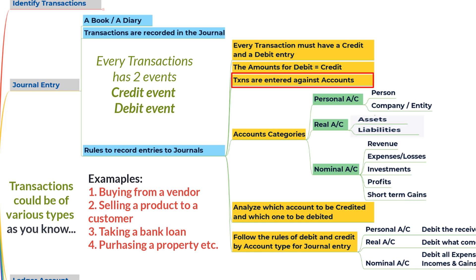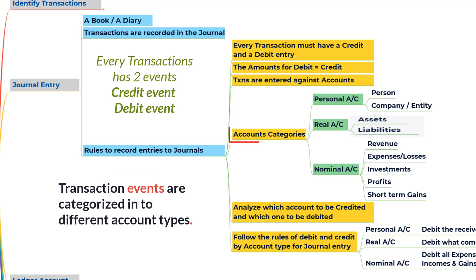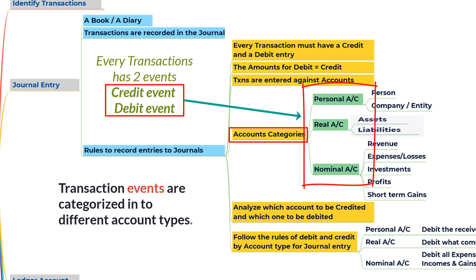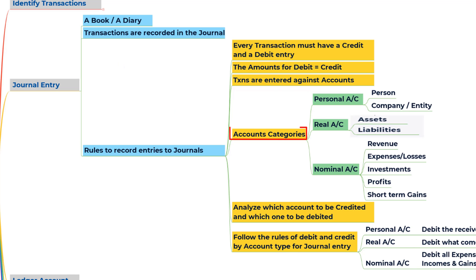Transactions are various in nature — buying from a vendor, selling to a customer, or taking a loan. In the business world, categorization is based on the type of transaction, and the event is called an account. Based on the event type, transactions are categorized under three types: personal account, real account, and nominal account. We need to understand which transaction events fall under each category.